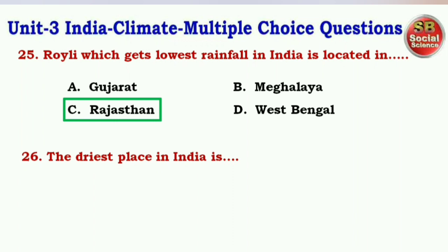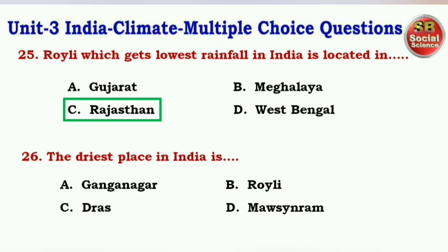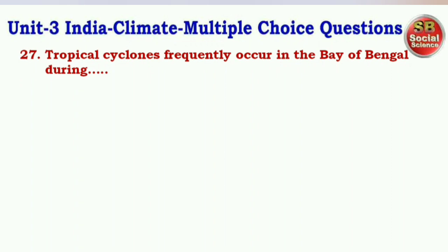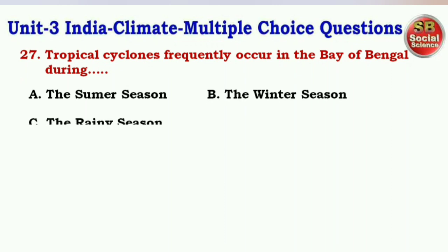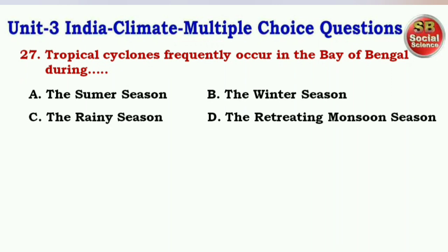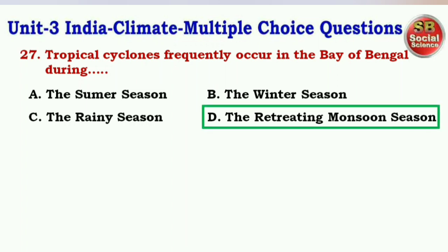Next question: The driest place in India is — options are Ganganagar, Ruili, Drass, Mawsynram. The right answer is option B — Ruili. Next question: Tropical cyclones frequently occur in the Bay of Bengal during — options are the summer season, the winter season, the rainy season, the retreating monsoon season. The right answer is option D — the retreating monsoon season.